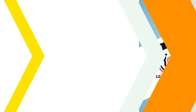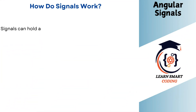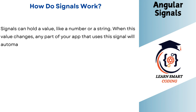How do Angular Signals work? Signals can hold a value like a number or a string. When this value changes, any part of your app that uses this signal will automatically update.